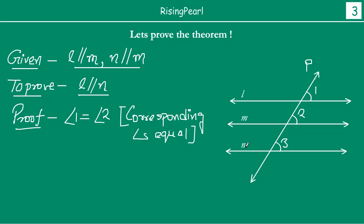Now think about line M and line N. You have a transversal P that cuts these two lines. Angle 2 and angle 3 should be equal as well, because angle 2 and angle 3 are corresponding angles. So, if line M and N are parallel — which is given to us — then these two angles are equal, for the same reason: corresponding angles are equal.